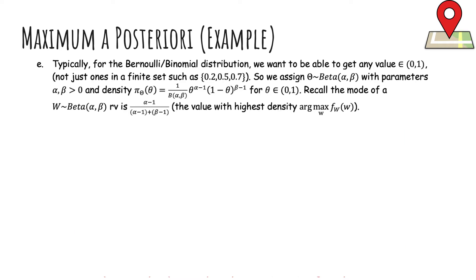Of course we don't want to restrict ourselves to just three numbers. For the Bernoulli/binomial distribution, theta can be any value in [0, 1], so we need a probability distribution over all real numbers in that range — a density function rather than a discrete pmf. We assign theta the beta distribution with parameters α and β. The beta density function for θ ∈ [0,1] has a normalizing constant that makes it integrate to one; the key part is the functional form in θ.